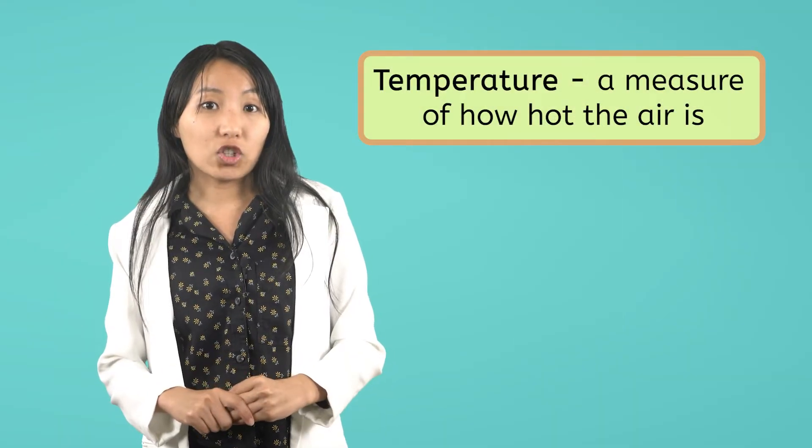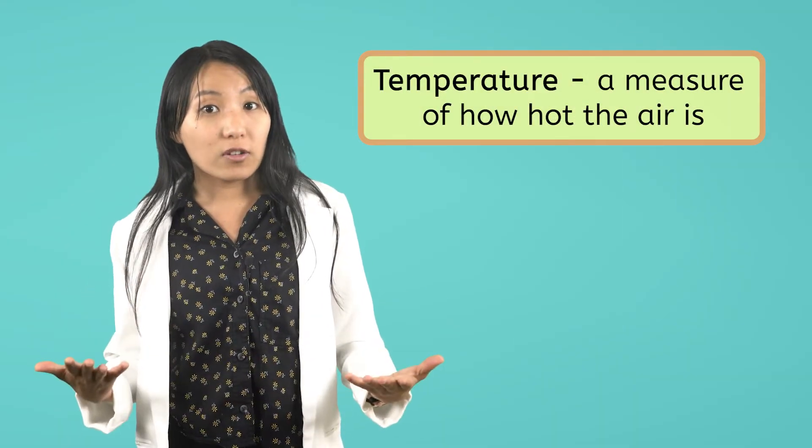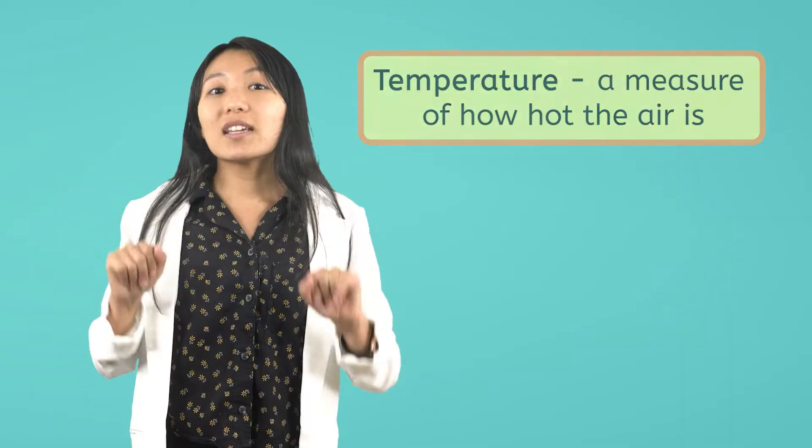That reminds me, we have one final element of weather to look for. To check the final element of weather, we need a special scientific tool. Do you remember what the name of this tool is? Good job! A thermometer. A thermometer measures the temperature, which, when we are talking about weather, is the amount of heat in the air.